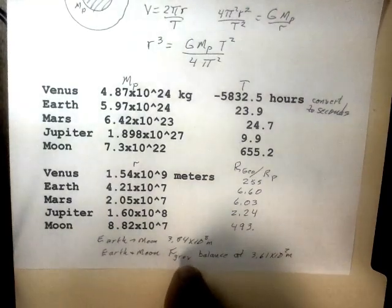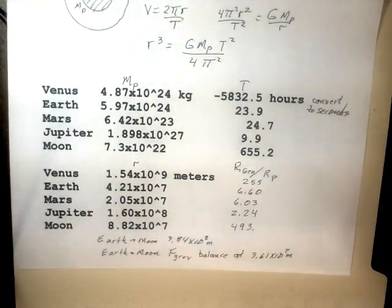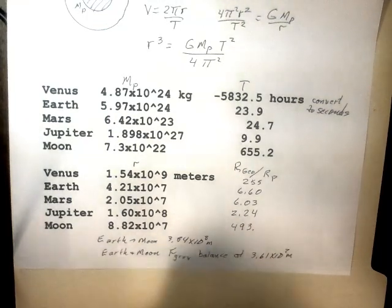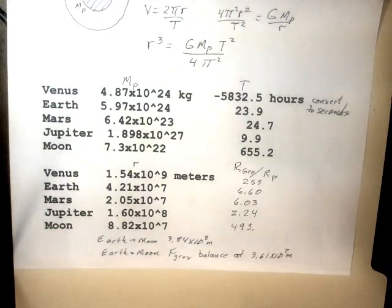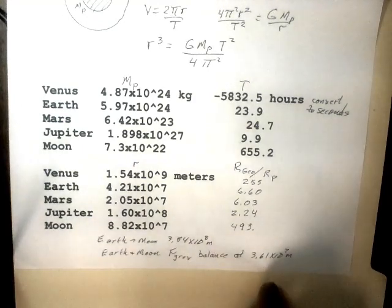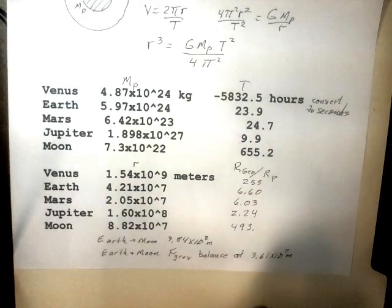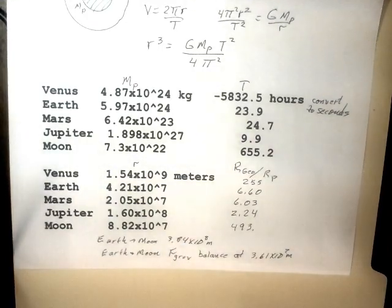Just to remind you, the distance from the earth to the moon is 3.84 times 10 to the eighth meters, so this is a considerable fraction of that distance. In another video I'm going to calculate the balancing point between the force of gravity of the planet and the moon. For the earth and the moon, that balance point is 3.61 times 10 to the seventh meters away from the moon. We're getting too far out for the moon to hold on to a satellite that would move once around the moon every time the moon spins.